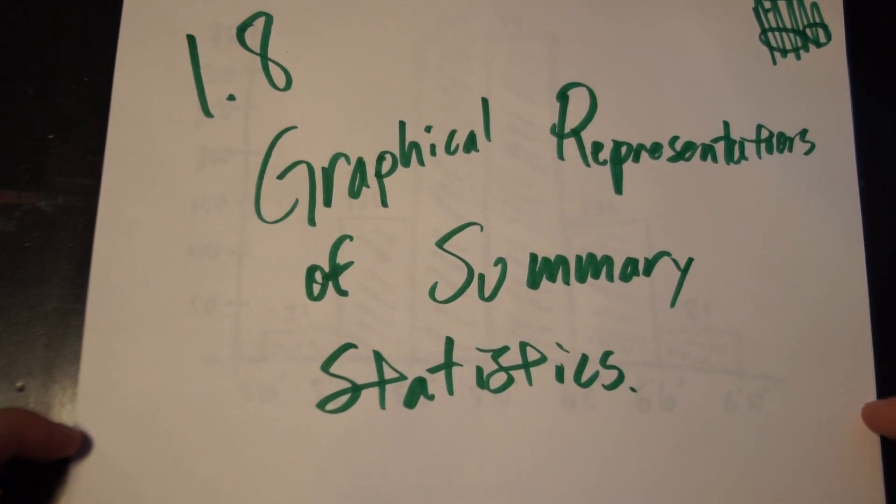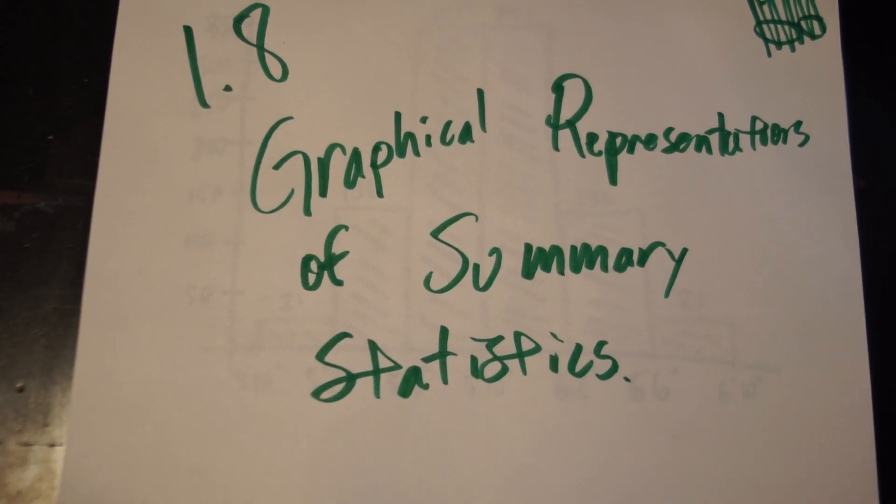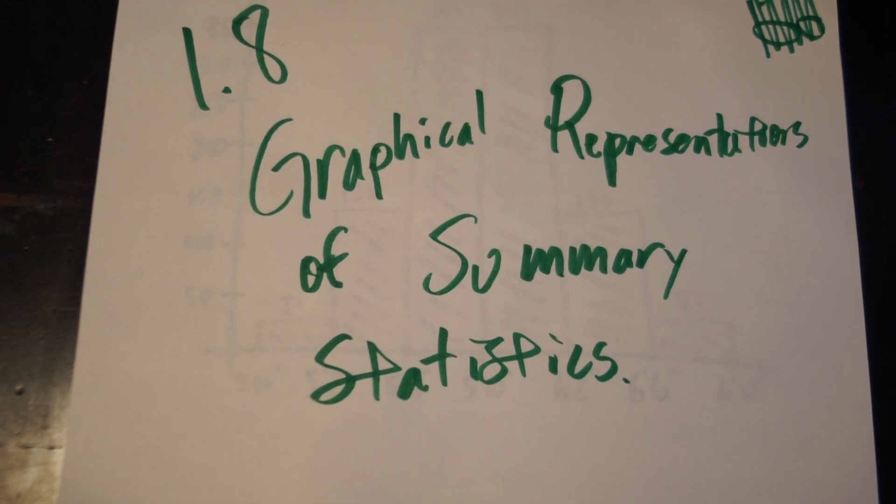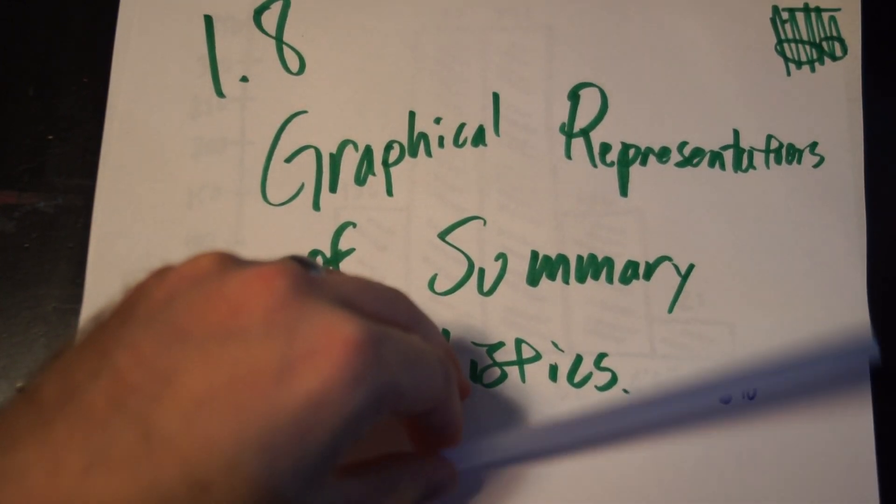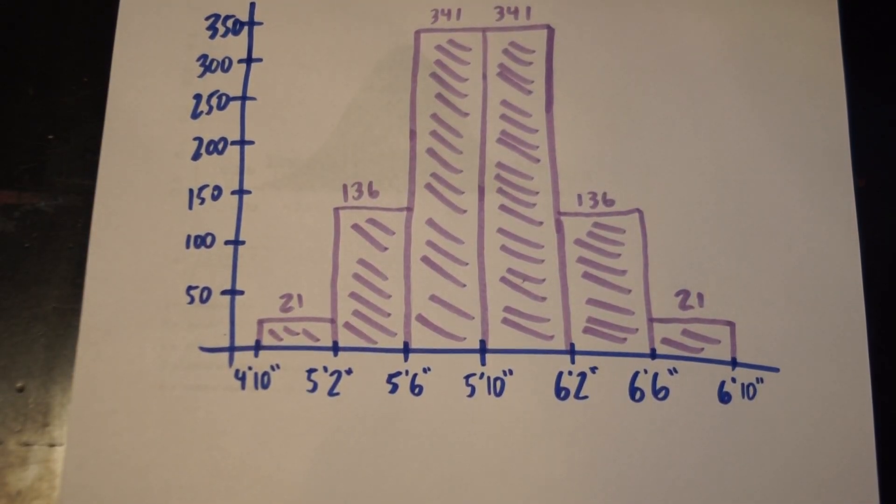All right, let's talk about graphical representations of summary statistics. So let's say we're considering this graph. This graph is of average height in America. I surveyed a thousand people, and this was the histogram that I came up with for everybody's height.